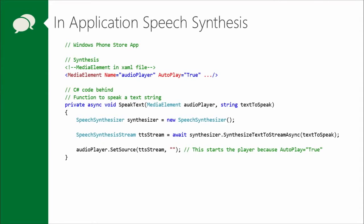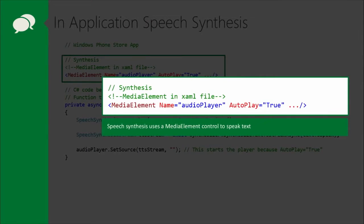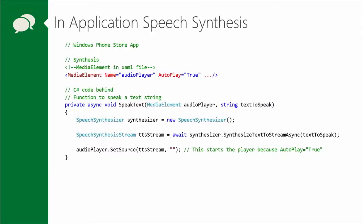Let's start looking at some code and walk through the basics of getting started with in-application speech synthesis. It's actually quite simple. It all starts with the media element, which can be declared directly in XAML or in C# code by creating a new media element. You have the option of setting the autoplay property to true, which means as soon as you assign a source to that media element it will automatically start playing. Otherwise you can control play, pause, and so on.